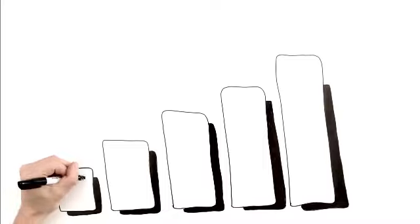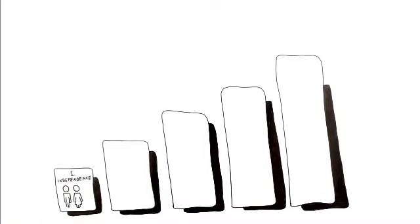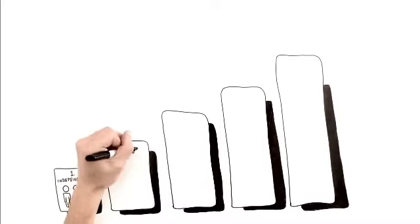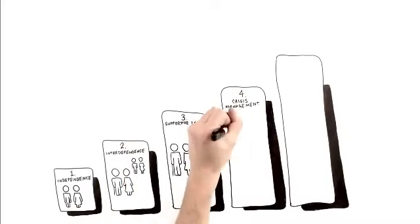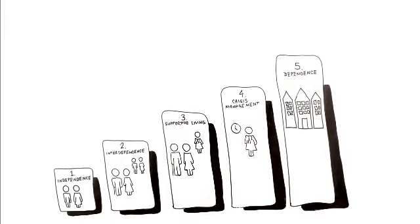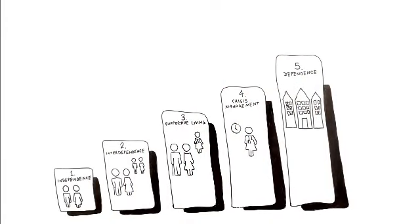retirement in the independent stage. From there, most of us will move on to interdependence, then supportive living, followed by crisis management, and lastly, dependence. The level of health care and personal assistance you'll need and the cost to meet...